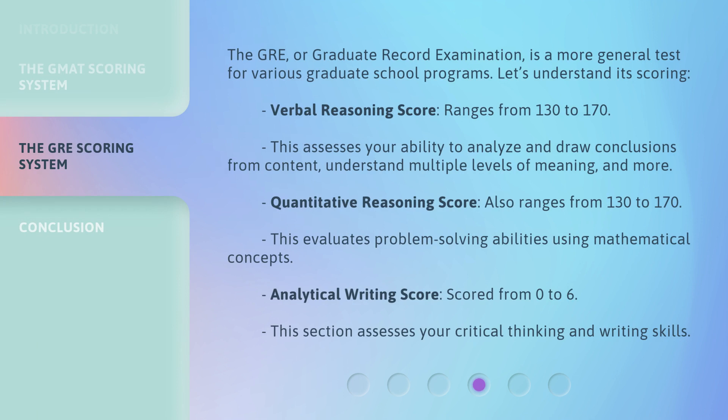The GRE, or Graduate Record Examination, is a more general test for various graduate school programs. Let's understand its scoring. Verbal Reasoning Score ranges from 130 to 170. This assesses your ability to analyze and draw conclusions from content, understand multiple levels of meaning, and more.